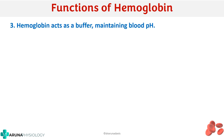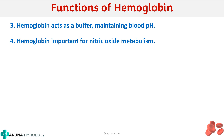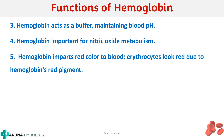Hemoglobin can also act as a buffer and thereby maintain the blood pH — we have seen more about this in the context of buffers present inside the blood. Hemoglobin also destroys physiologically important nitric oxide molecules, helping to maintain normal levels of nitric oxide. It also imparts the red color to the blood, which is why erythrocytes appear red due to the presence of hemoglobin pigment.